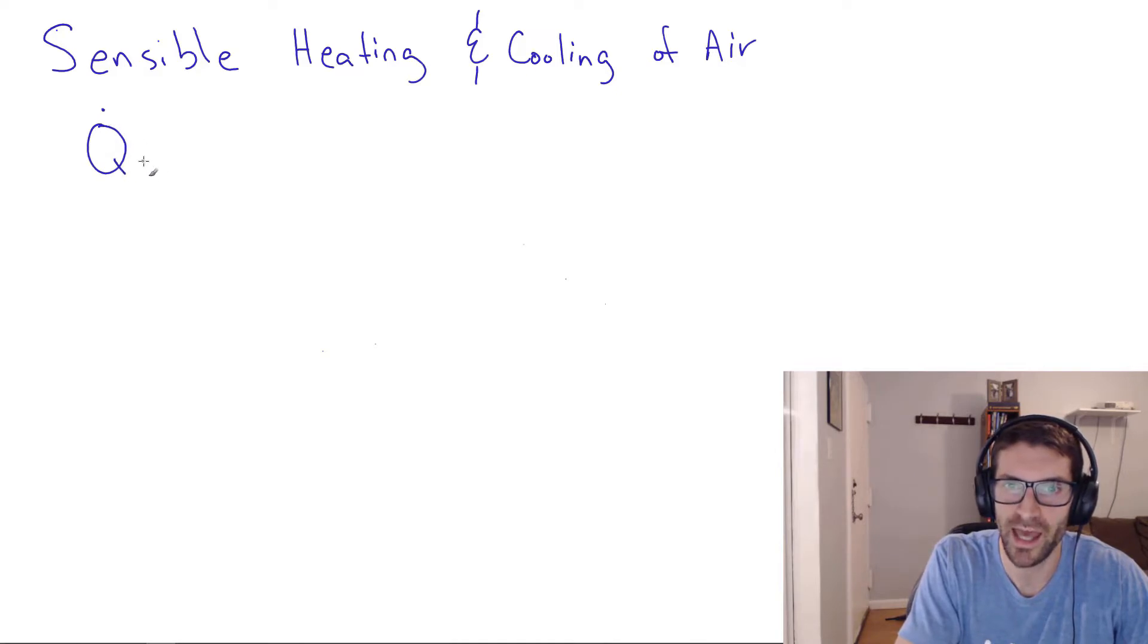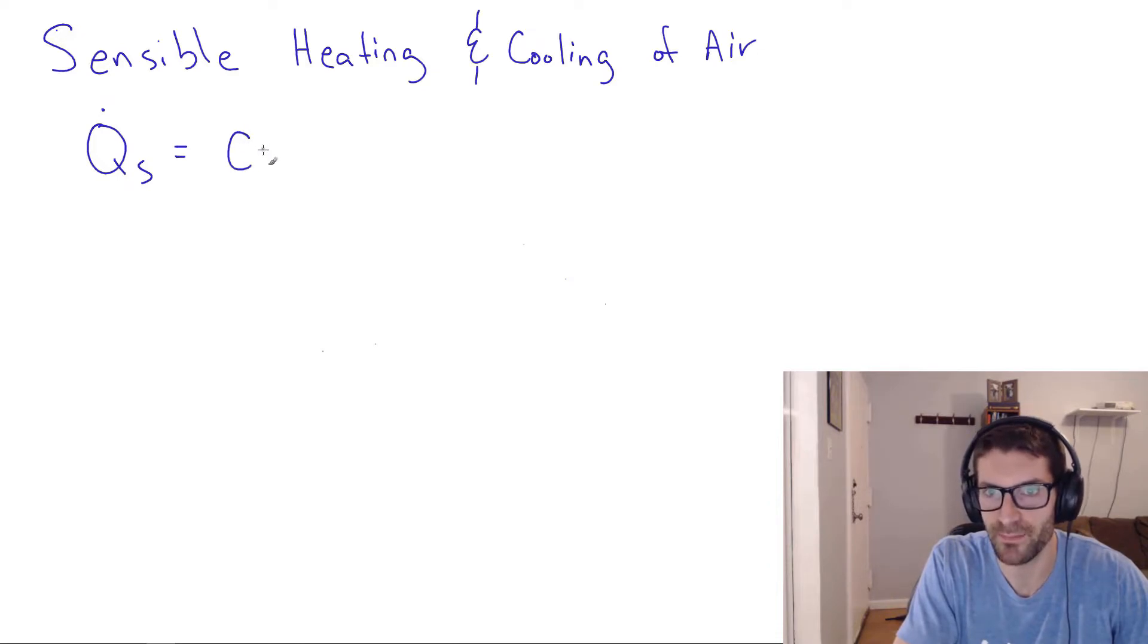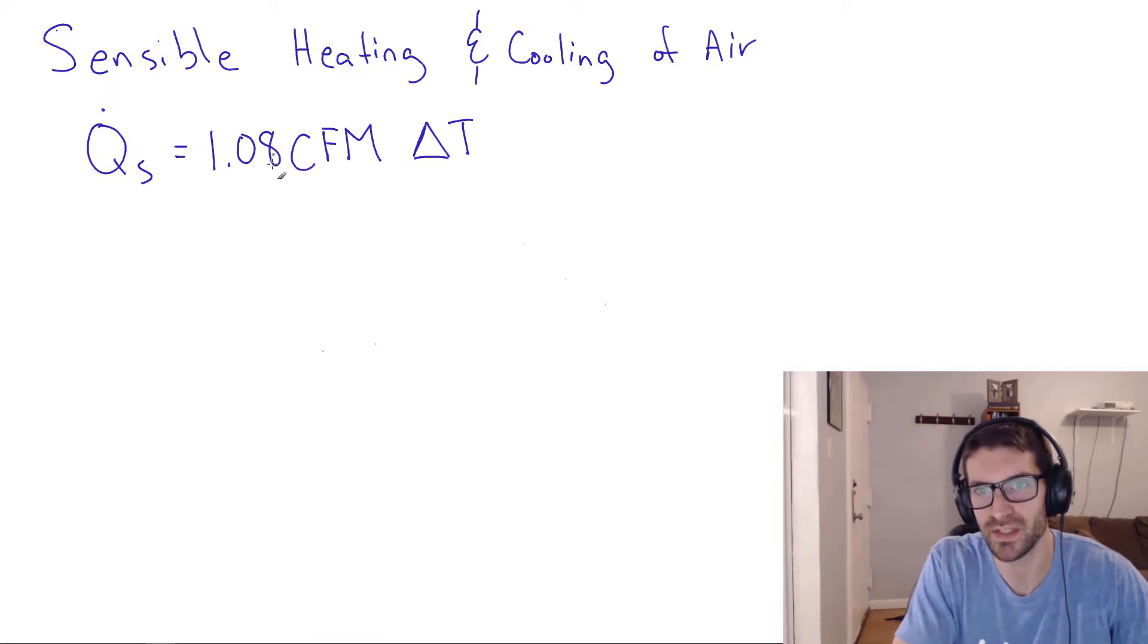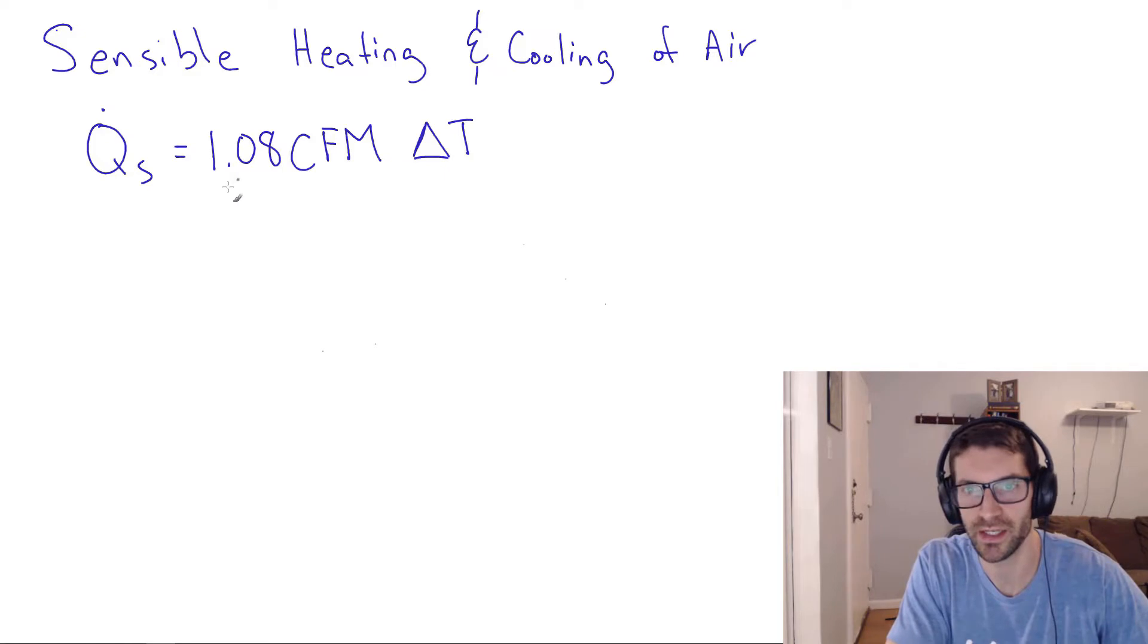Q dot S, to the volume flow rate of air given in CFM, and the delta T, the temperature differential that that air is undergoing. And there's a constant multiplier in front of that of 1.08, or sometimes you'll see this as 1.1. If you're really in a hurry and you don't want to type 08, you can write 1.1 CFM delta T.